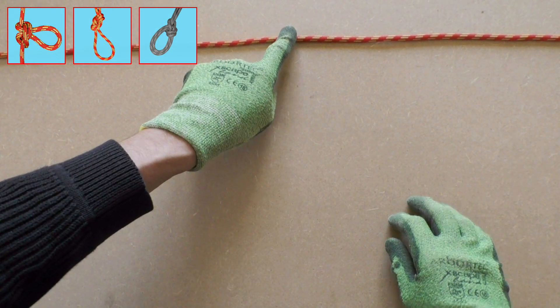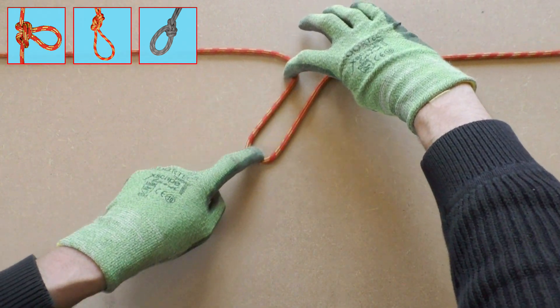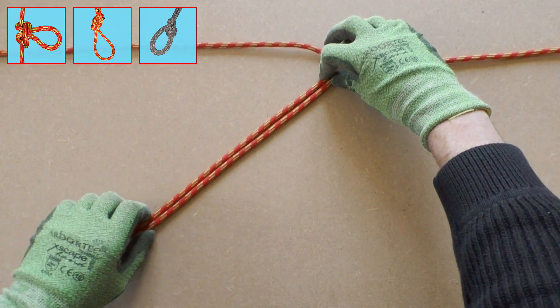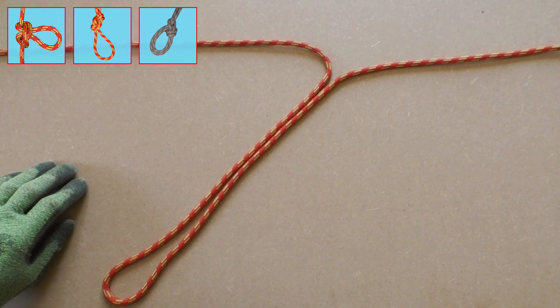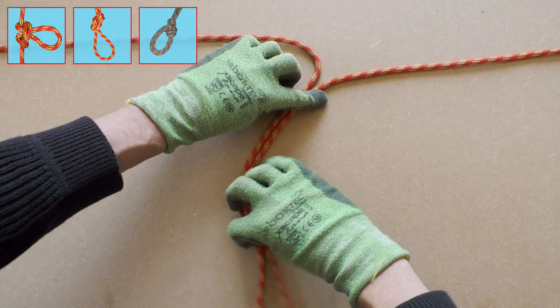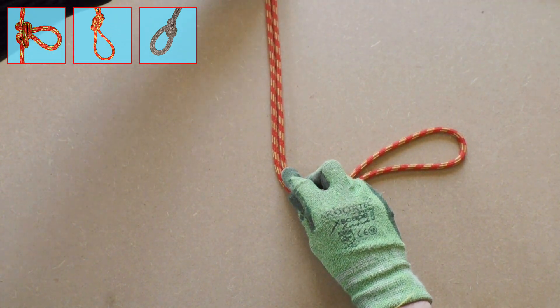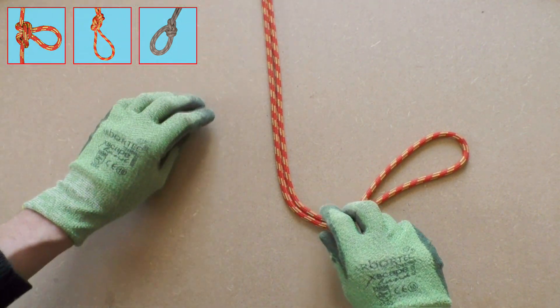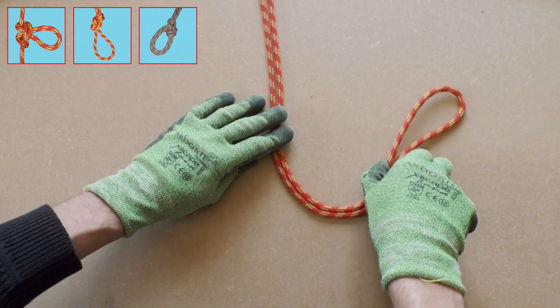The final knot to create a loop in the middle of a rope is the bowline knot on a bite. This knot is a bit more difficult to tie than the alpine butterfly loop or the figure 8 knot on a bite, but the bowline knot is much easier to untie after it has been loaded. Start tying the bowline knot by taking a bite of rope.